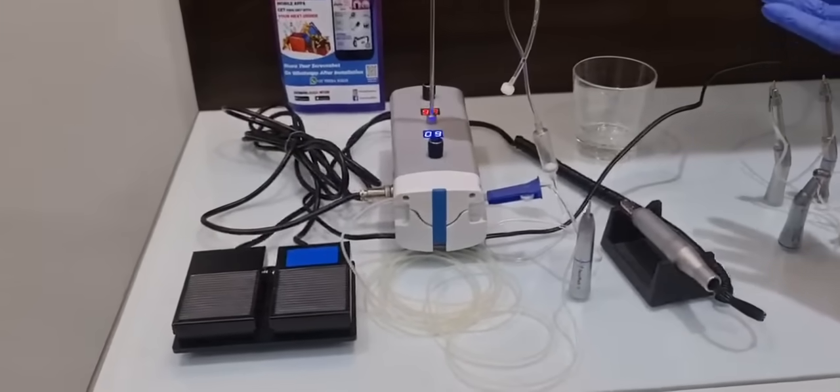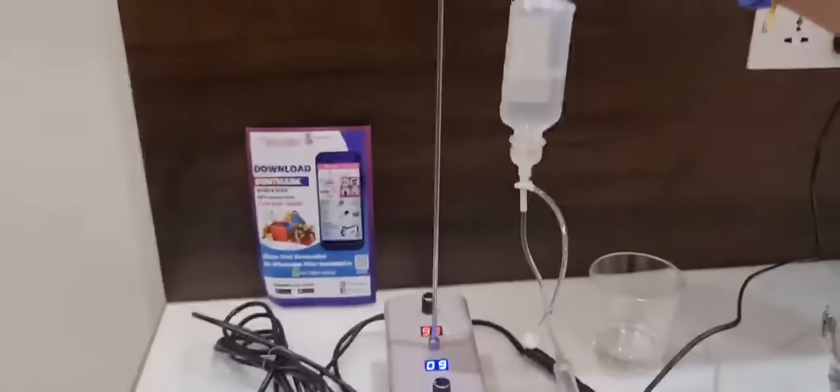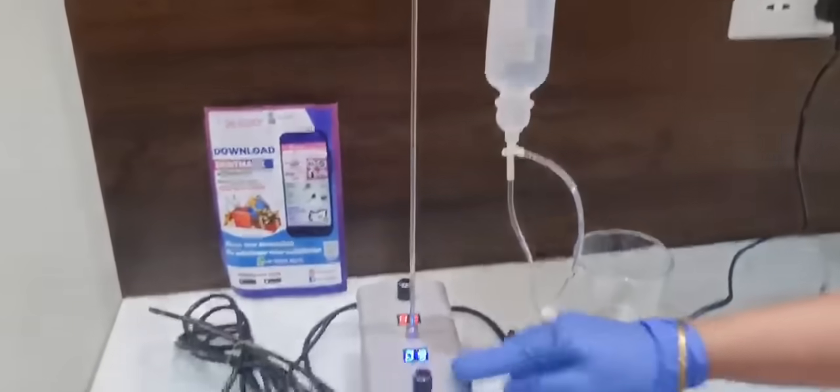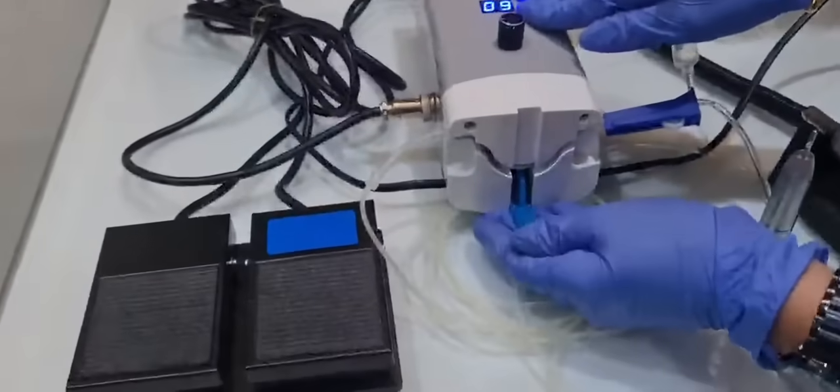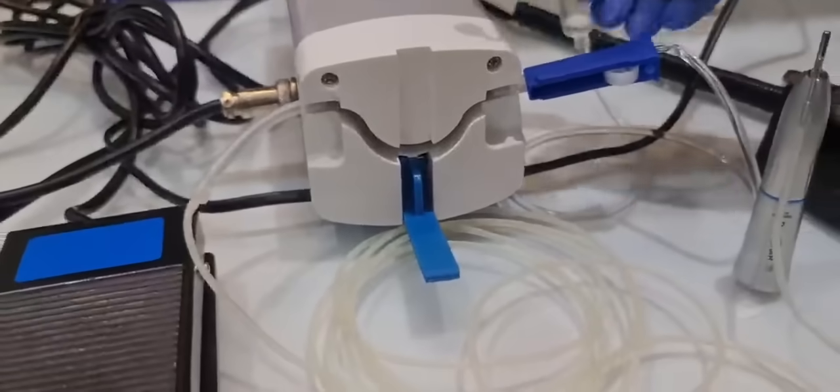Now let's go ahead and see the actual working of this surgical brushless E-type motor. You can see that the saline water is attached to it. This is the place where you are going to attach the tubing of the saline water.